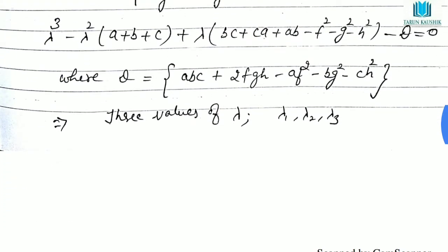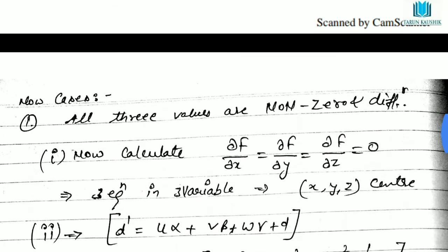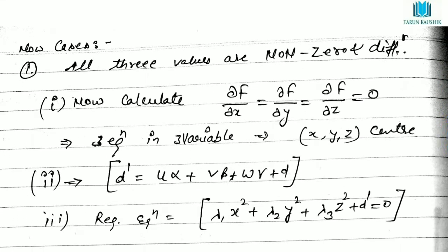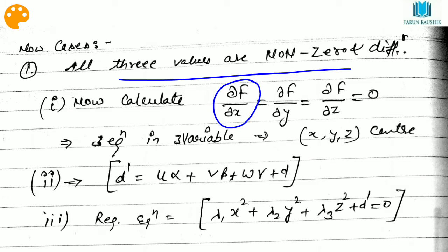After calculating the values of lambda, we study several cases. The first case: all three values of lambda are non-zero and different, for example lambda₁ = -2, lambda₂ = 3, lambda₃ = 4. In this case, you perform partial differentiation of f with respect to x, with respect to y, and with respect to z, and put them equal to zero.